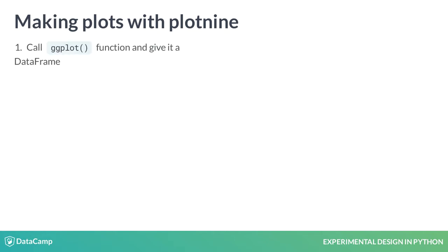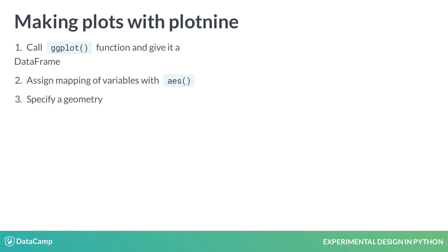We start with a pandas data frame containing at least one variable of interest, and pass it to the ggplot function. Then we define what aspects of the plot will correspond to which variable of the data frame. Finally, we specify a geometry, which is the basic form of our plot.